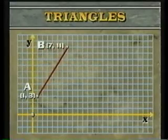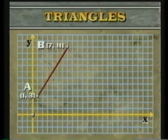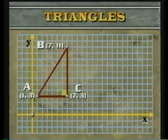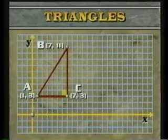The Pythagorean theorem enables us to find the length of any line segment on the coordinate plane. For example, suppose you are asked to find the length of the line segment between the points A and B, whose coordinates are 1, 3 and 7, 11. A, B is the hypotenuse of a right triangle. Let us draw the point C at the bottom right corner. A, C and C, B are the legs of our right triangle. C has coordinates 7, 3.